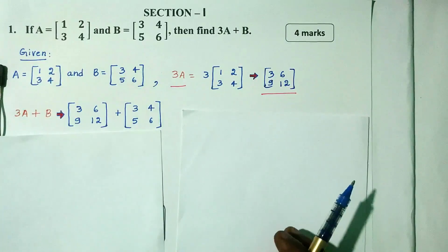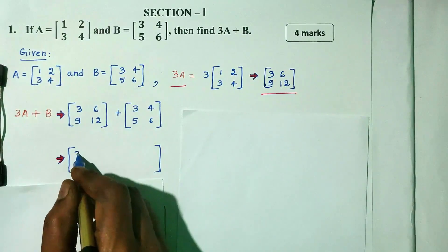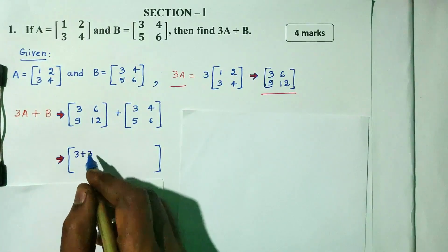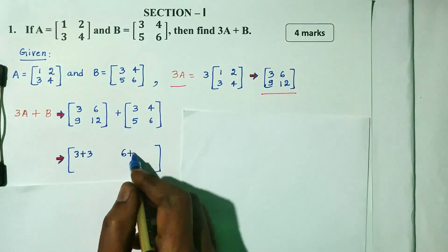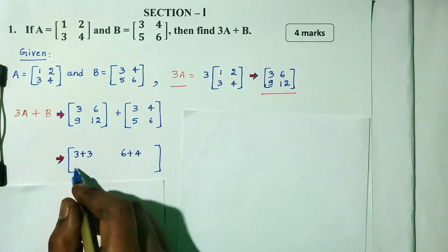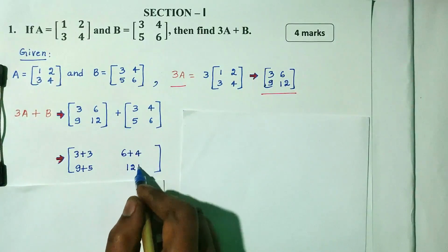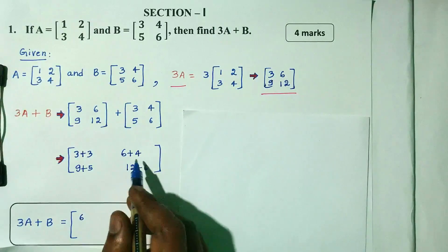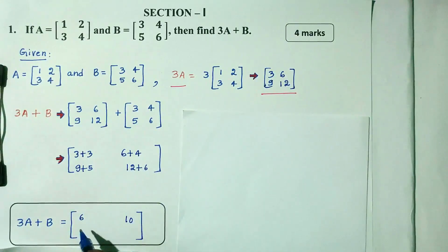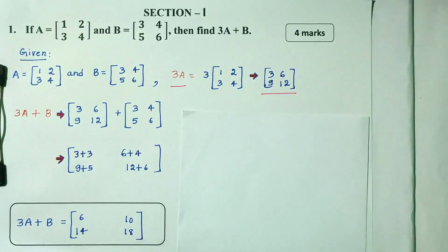The matrix is in add mode. So step by step: 3 plus 3, 6 plus 4, 9 plus 5, 12 plus 6. Adding: 3 plus 3 is 6, 6 plus 4 is 10, 9 plus 5 is 14, 12 plus 6 is 18. So the answer is [6, 10, 14, 18]. That is the 4-mark answer.